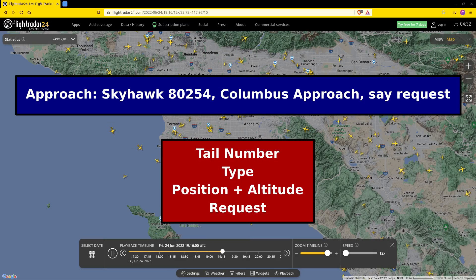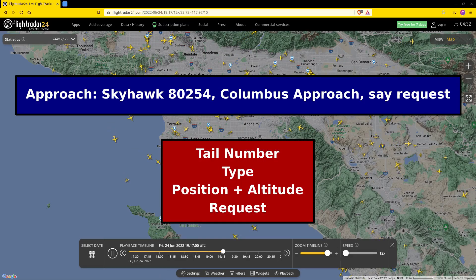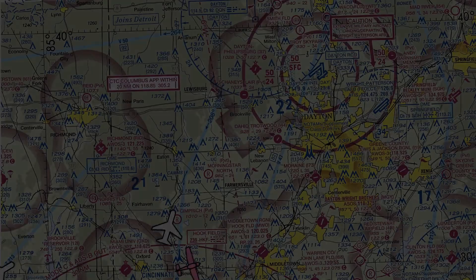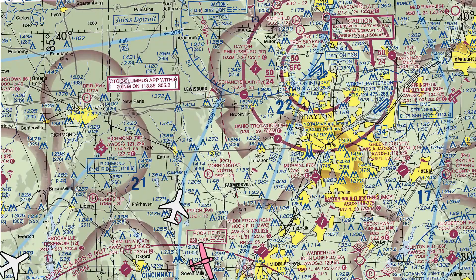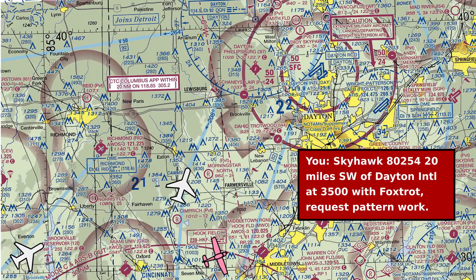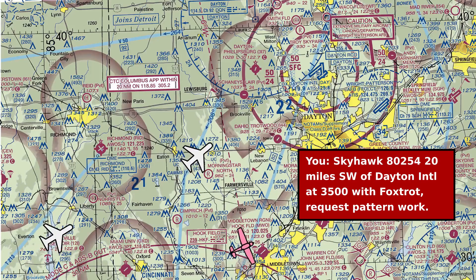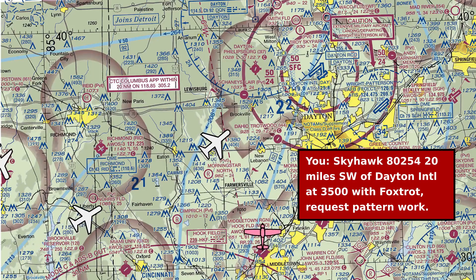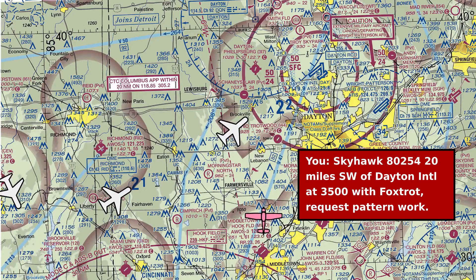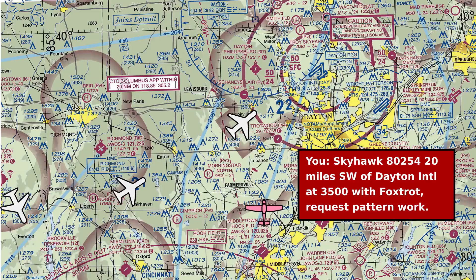The next reply should include the aircraft tail number, the type, the position, and what's being requested. So, for example: 'Skyhawk 80254, 20 miles southwest of Dayton International at 3500 with information Foxtrot, Request Pattern Work.'